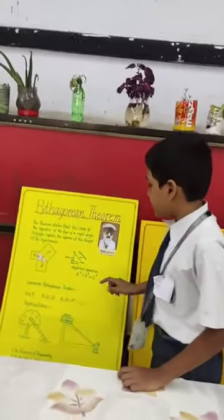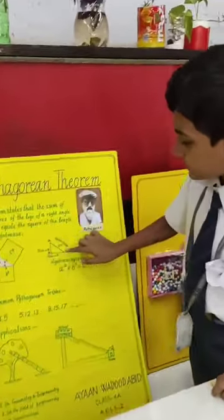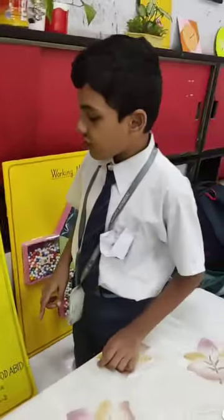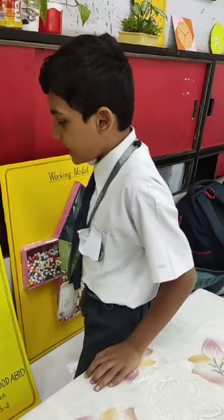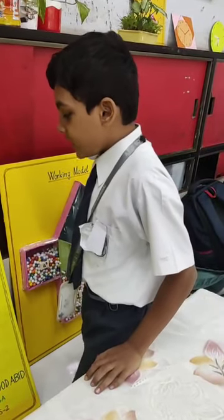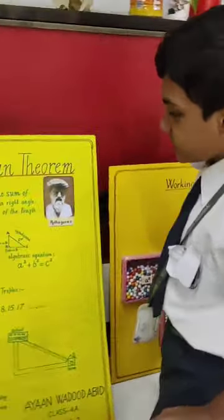As you can see, this is right angle triangle ABC. We can write the Pythagorean theorem as a squared plus b squared equals c squared.